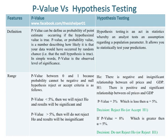If the p-value is equal to 3%, which is less than the level of significance alpha equal to 5%, the decision will be to reject H0 or accept H1. If the p-value is equal to 8%, which is greater than the level of significance alpha equal to 5%, the decision will be to do not reject H0 or reject H1.